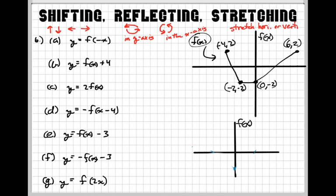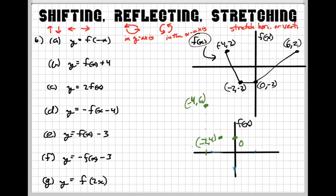For the first point (negative 4, 2), I go over to negative 4 and add 4 to the 2 — that's going to be off my graph a bit — so it becomes (negative 4, 6). This one, (negative 2, negative 2), becomes (negative 2, positive 2) because adding 4 brings it there. The point (0, negative 2) becomes (0, 4). And the last point goes up 4 to become (6, 2). So it just shifted up from its original spot, up 4 spaces.